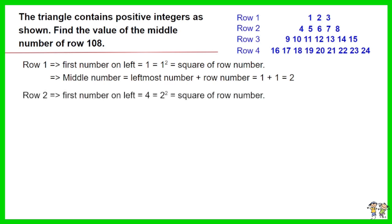The leftmost number of row 2 is 4 which is square of 2. The middle number of row 2 equals the leftmost number plus row number equals 4 plus 2 equals 6.